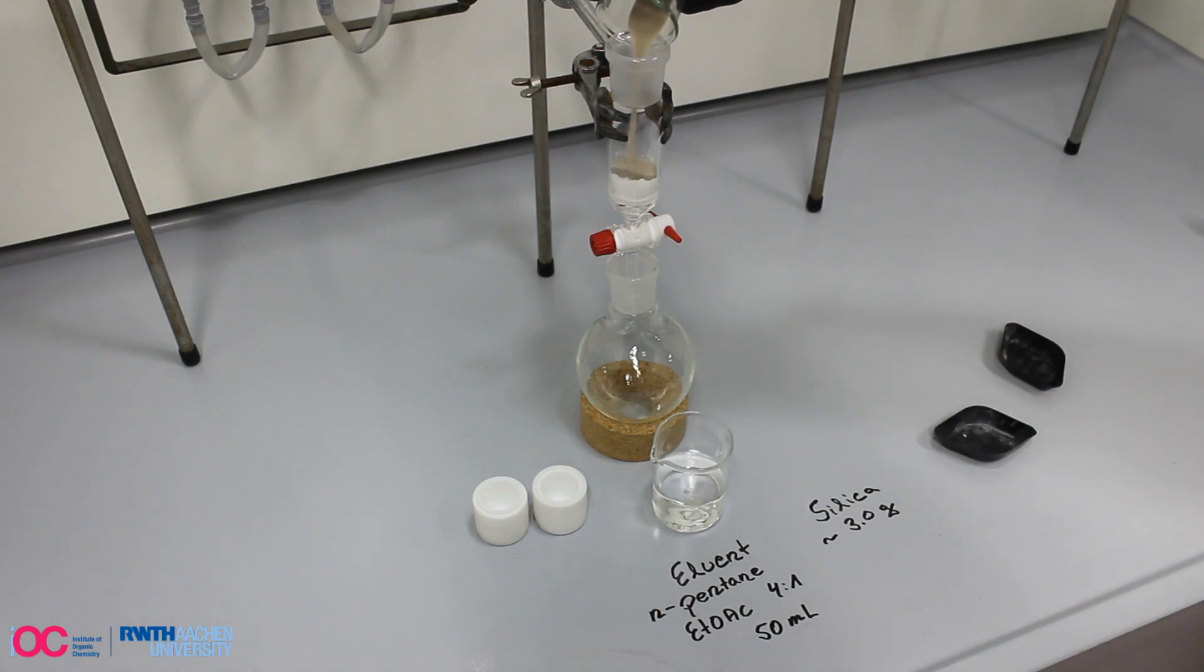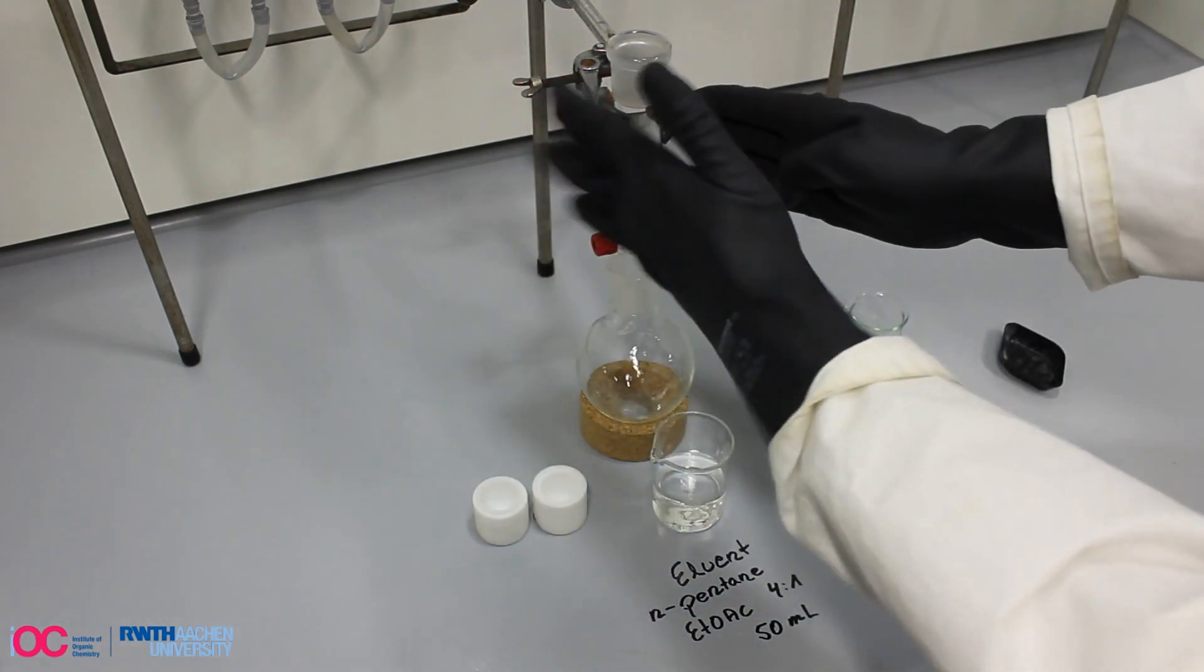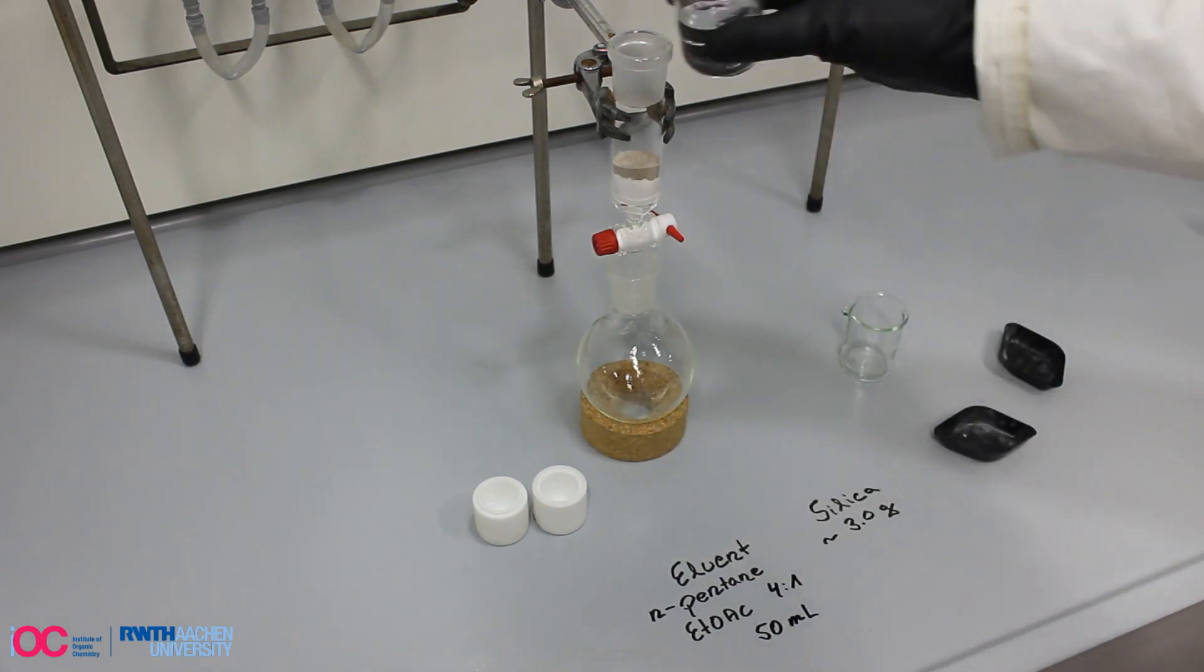Then, the plug was rinsed with approximately 50 ml of the appropriate eluent, in this case a 4 to 1 mixture of n-pentane and ethyl acetate.